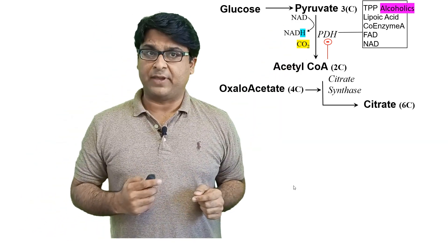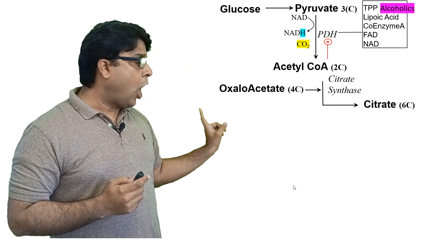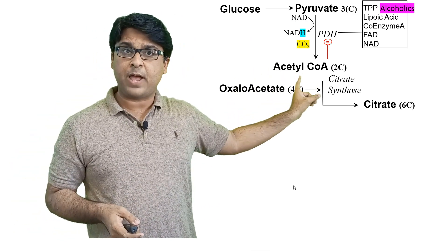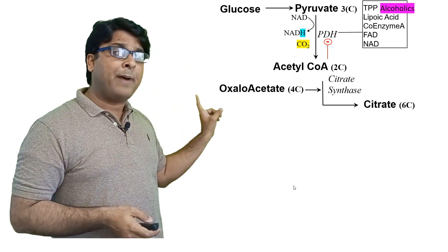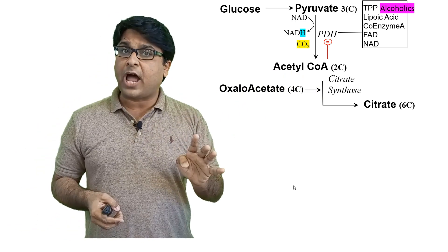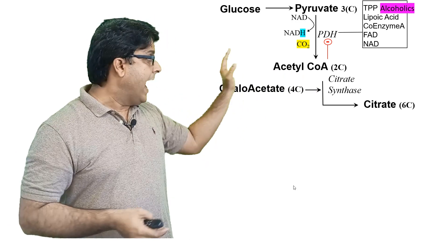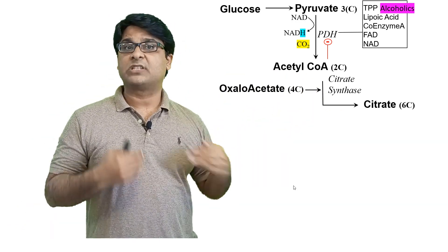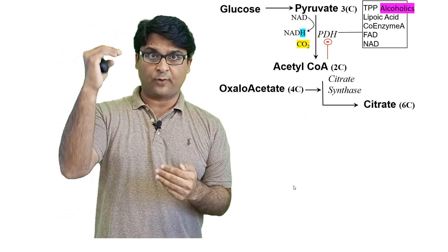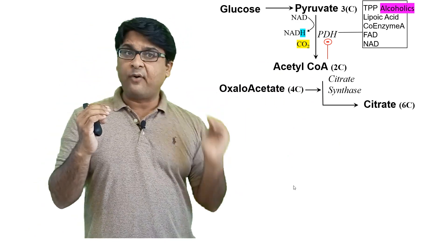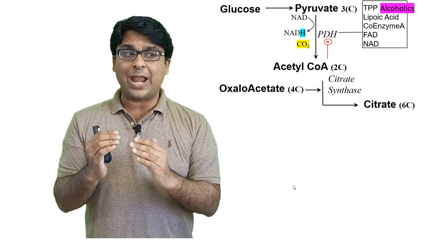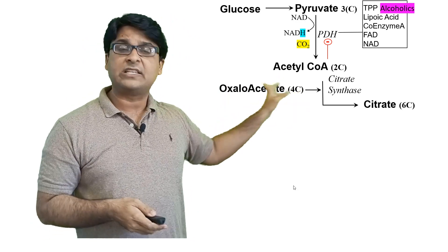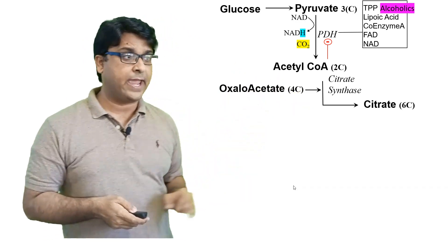Acetyl-CoA is a two carbon compound. It combines with oxaloacetate, which is a four carbon compound, and they together produce citrate, which is a six carbon compound. Two carbons from acetyl-CoA plus four carbons from oxaloacetate, and this reaction is catalyzed by the enzyme citrate synthase.